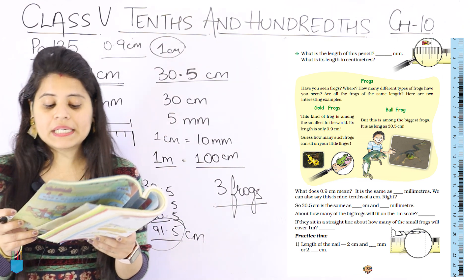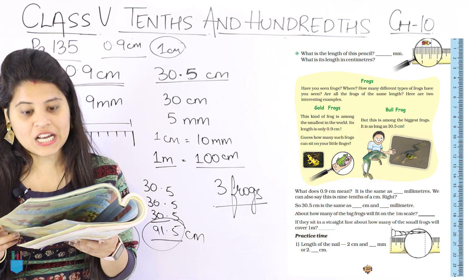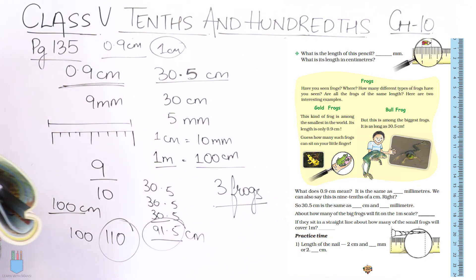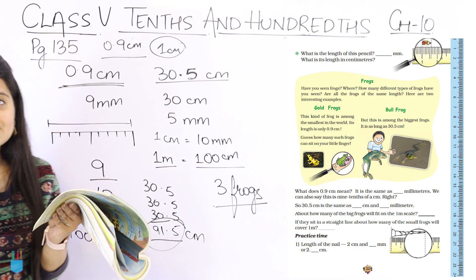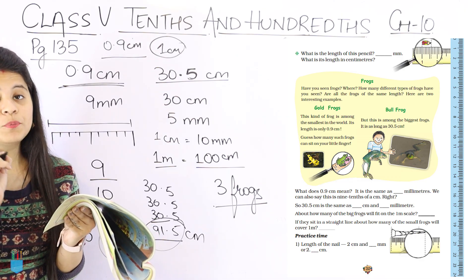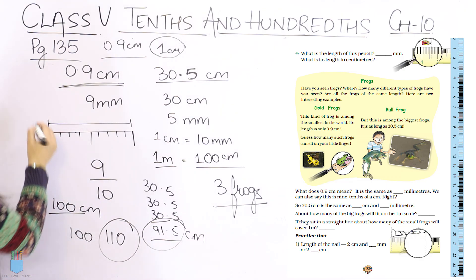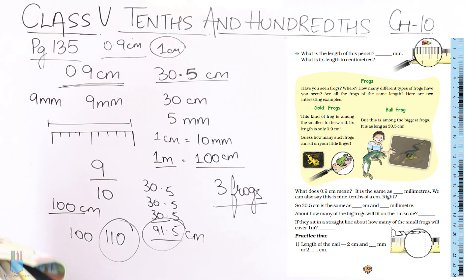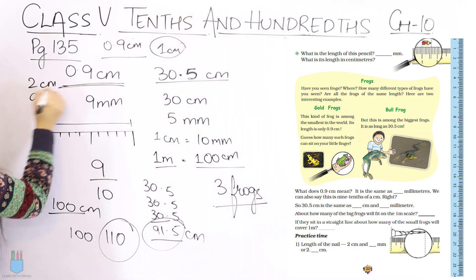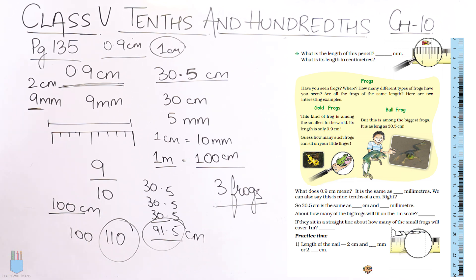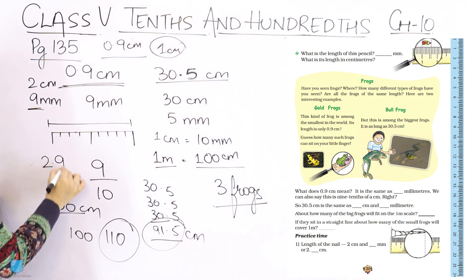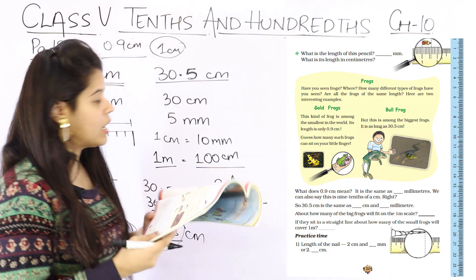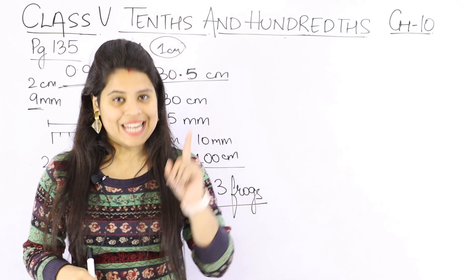Now for practice: the first question shows the length of a nail — 2 centimeters and dash millimeters, or 2 point dash centimeters. Looking at the ruler, it goes from 2 centimeters to just before 3, meaning 2.9. So we write it as 2 centimeters and 9 millimeters, or we can write it as 2.9 centimeters. That was page number 135, and now we'll move to the next page.